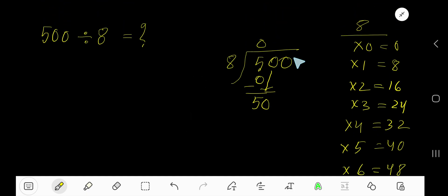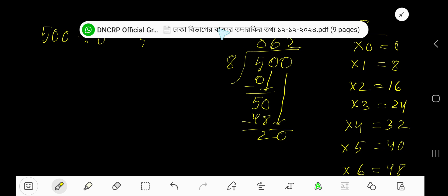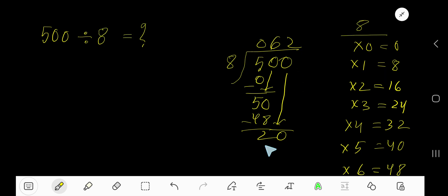Subtract, get 2. Bring down this 0 to get 20. 8 goes into 20 how many times? 3 times equals 24 which is greater, so 2 times. Write 2. 2 times 8 equals 16. Subtract to get 4.